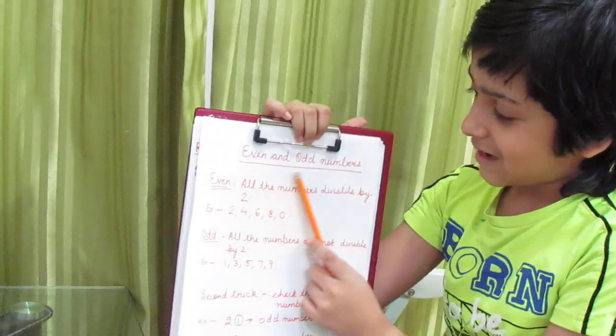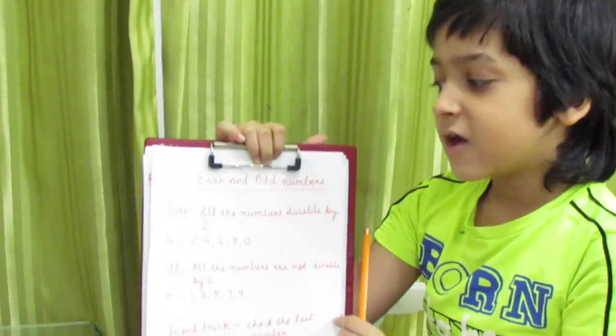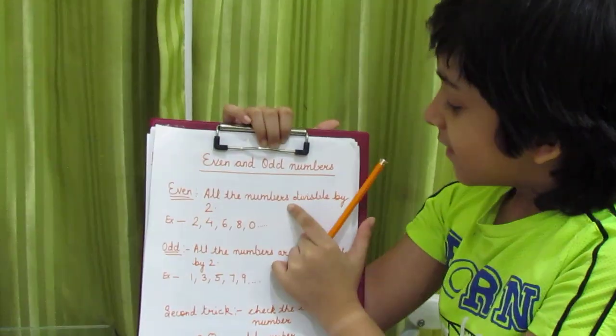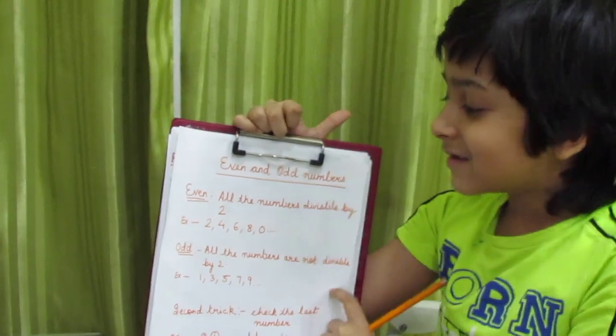Now we will tell you the first trick to learn even and odd numbers. All the numbers divided by 2 is even numbers.